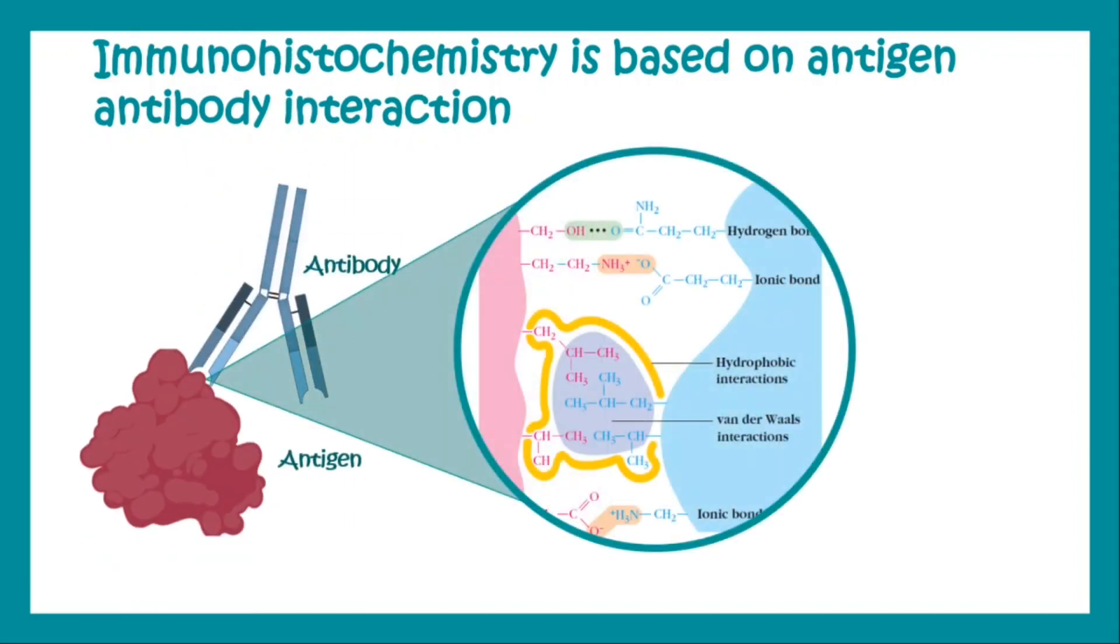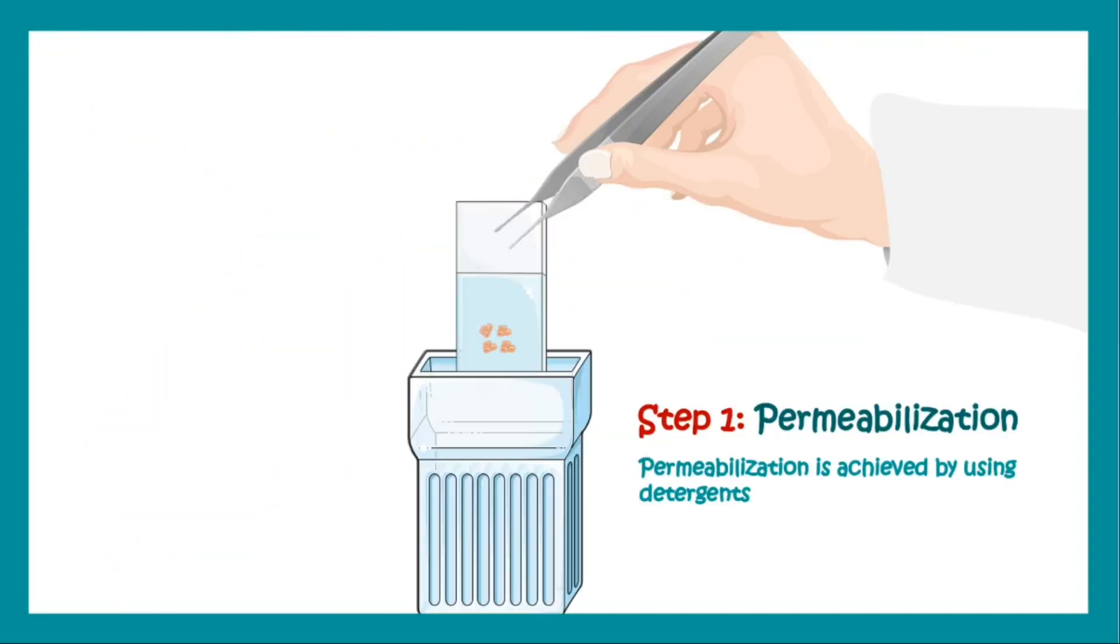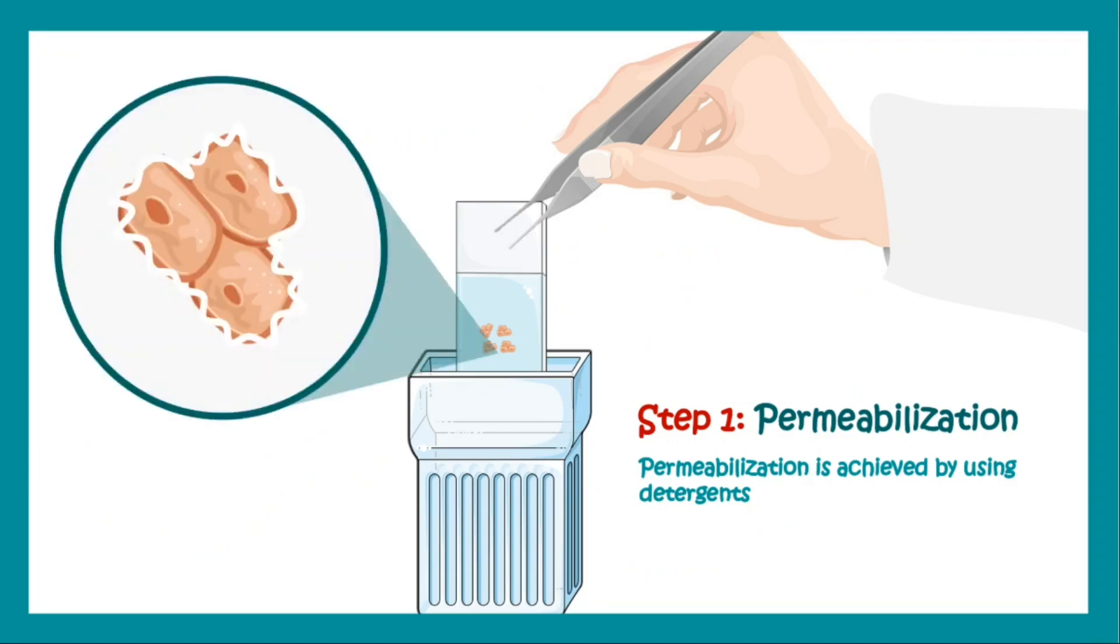To do an antigen-antibody interaction, first we have to permeabilize the tissue cells. That is increasing the permeability of the membranes of the cells in the tissue, and this is achieved by using detergents.